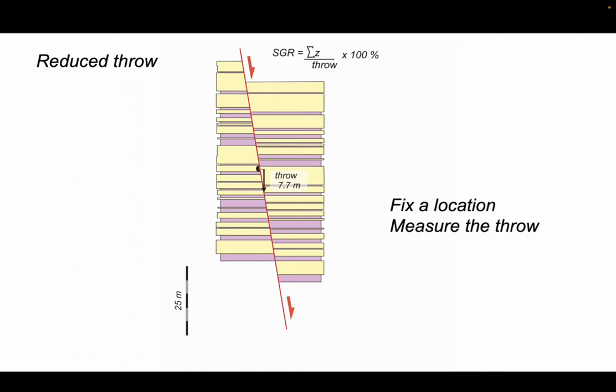We sum the shales that have gone past that point on the fault. It's, in this case, just one rather thin shale interval. So we can sum that up and it's just 0.5 meters.